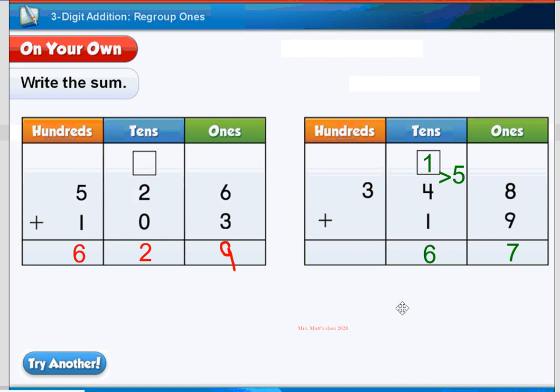We're not done yet, so we're going to move over to our hundreds place. And we're going to ask ourselves, do we have more? And look, we do. But look here. It says 3, and there's a blank. Whenever you see a blank, that means 0. So 3 plus 0 equals 3. And your sum for this problem is 367.